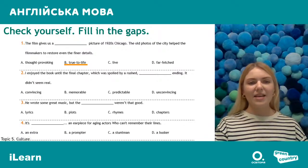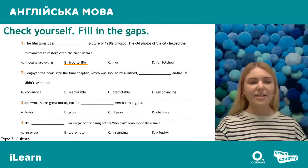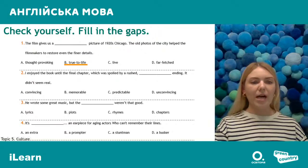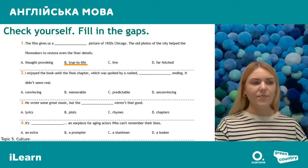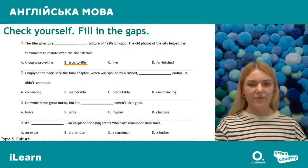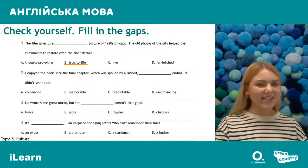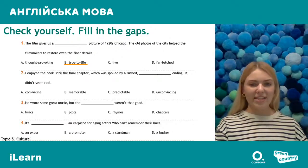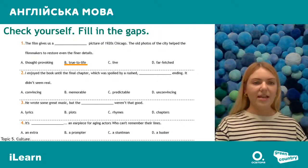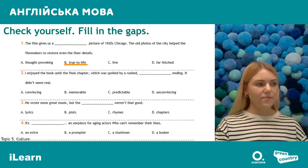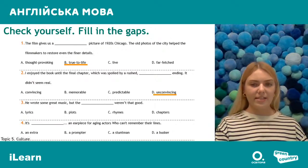Number two: 'I enjoyed the book until the final chapter, which was spoiled by a rushed ending. It didn't seem real.' The options are: A — convincing (переконливий), B — memorable, C — predictable (передбачуваний), D — unconvincing (непереконливий). The ending can be predictable, but here the sentence continues saying it didn't seem realistic. So D — 'unconvincing' — is more logical here.